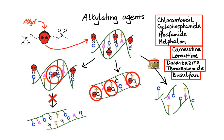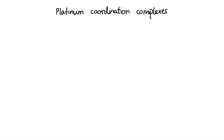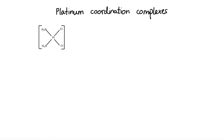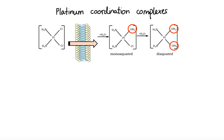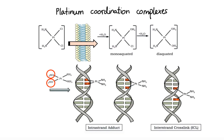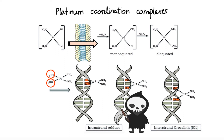Our next group, platinum coordination complexes, act through a similar cross-linking mechanism, although they do not have reactive alkyl groups. Instead, typical platinum-based agents generate reactive platinum species by losing one or more leaving groups — in this example a chloride ligand — which is then replaced by water molecules to form mono and diaqua platinum complexes. These activated, highly reactive complexes react with DNA bases, leading to formation of intrastrand and interstrand cross-links. When polymerases transcribe DNA, they stall at the platinum cross-link and recruit repair enzymes; if unable to repair the lesion, the cell triggers apoptosis. Examples include cisplatin, carboplatin, and oxaliplatin.